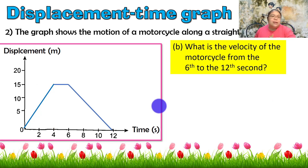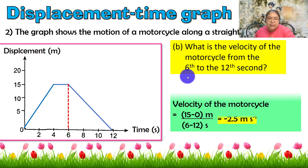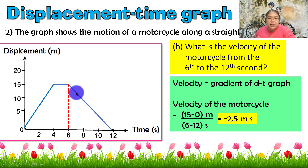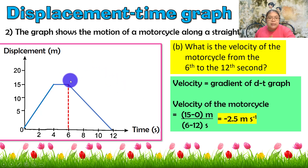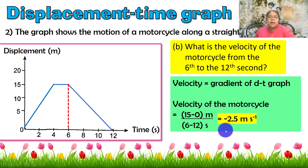The graph shows the motion of a motorcycle along a straight line. What is the velocity from 6 to 12 seconds? We draw lines at 6 and 12 seconds, then calculate: velocity equals gradient equals (15 minus 0) divided by (6 minus 12), giving negative 2.5 m/s. A note: this is a displacement-time graph, and the negative sign means the object is moving in the opposite direction.